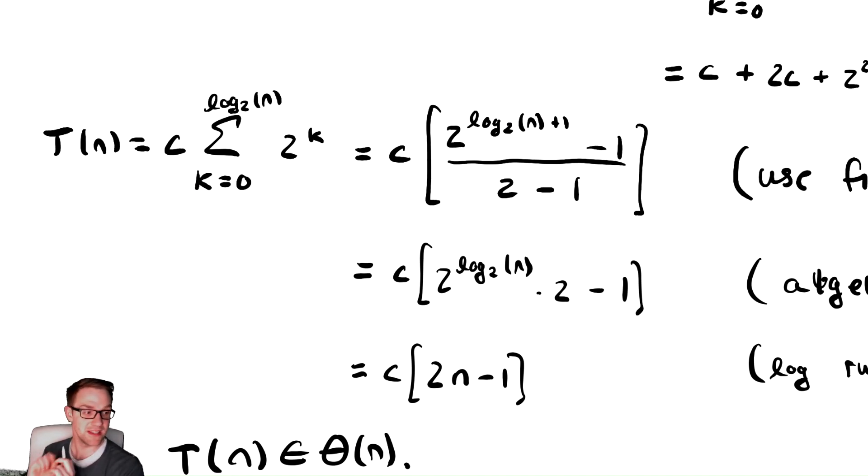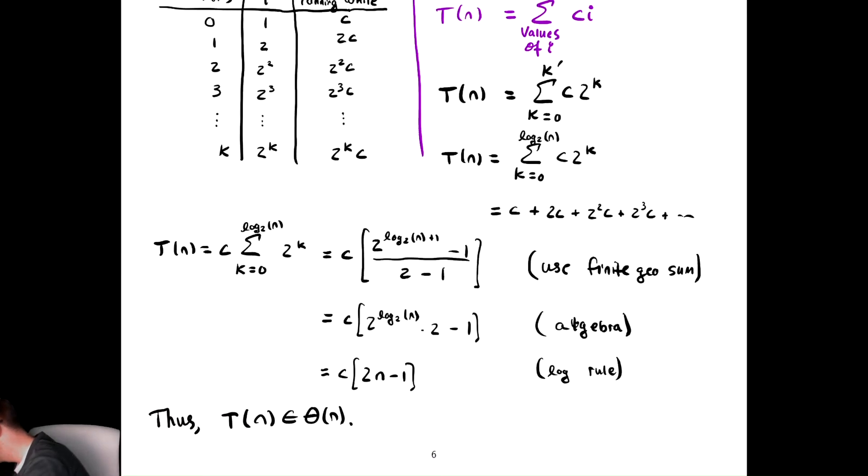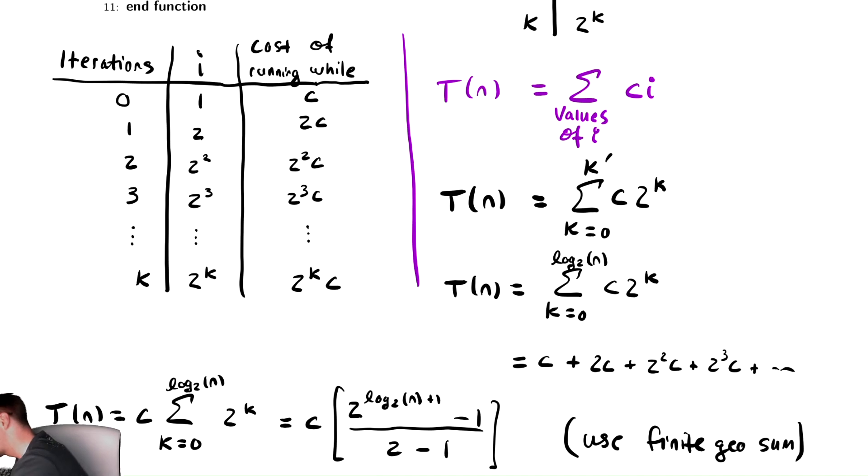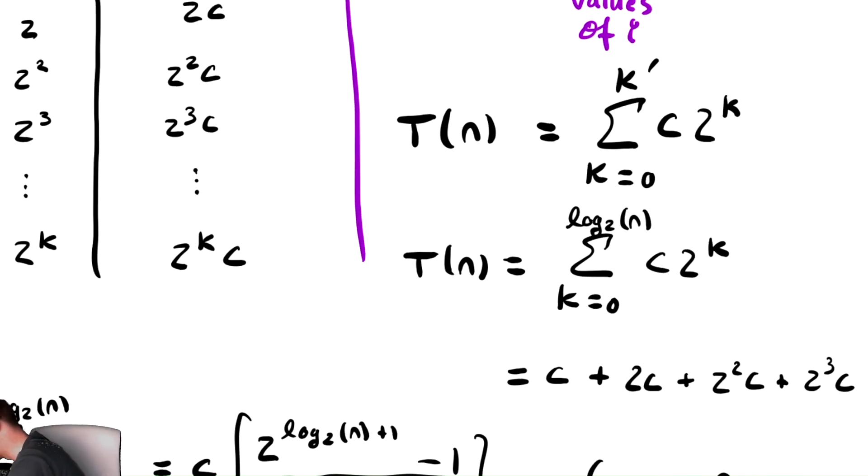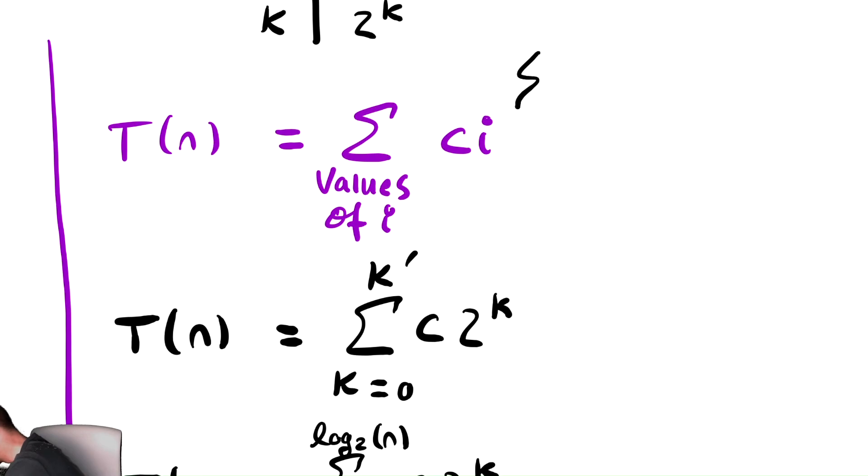So what did we see to do here? Our technique for analyzing this is to try to write it as a summation, and we can do that in general by taking the cost of the body of the while loop, which is what this ci is. This is the cost of the body of the while loop, and adding it up over all the values of i.